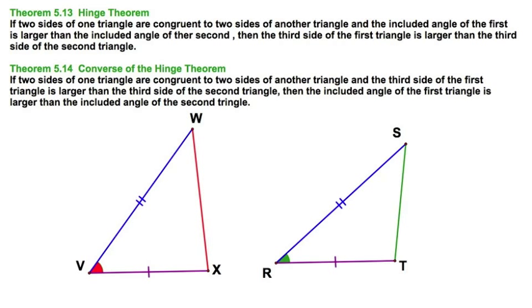It's all that simple. And of course, the converse would be the same thing. I've got the two pairs of matching sides, the blue and the purple. The red side bigger than the green side means the red angle is bigger than the green angle. Remember, it's the angle opposite that side.